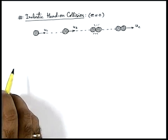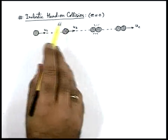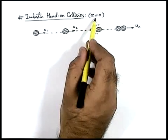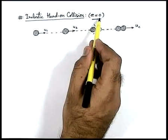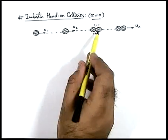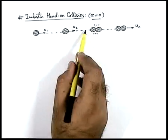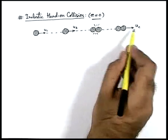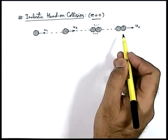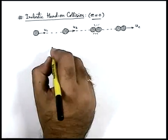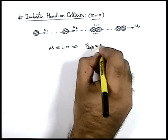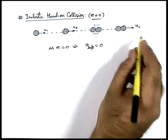Let's discuss the last case of head-on collision — inelastic head-on collision. In case of inelastic collision the coefficient of restitution is zero, which means bodies won't separate along the line of impact. In case of head-on collision, bodies are moving along the line of impact, so after collision the bodies will move with a common velocity. This means separation velocity is equal to zero.